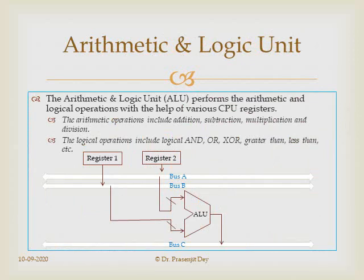What is an arithmetic logic unit? The ALU performs arithmetic and logical operations with the help of various CPU registers. As shown in the block diagram, register 1 loads data into bus B and register 2 loads data into bus A. The ALU collects operands from those two buses, performs an operation, and loads the outcome into bus C. Overall, the ALU collects data from different buses and loads the outcome into another data bus.